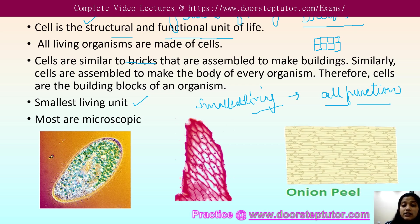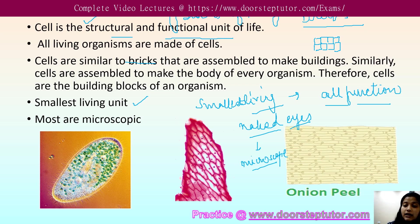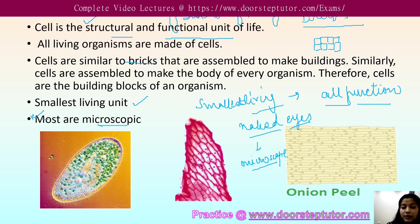We cannot see cells with the naked eye, though some cells you might be able to see without aid. Most cells, like human cells, cannot be seen by the naked eye, so they are viewed under a microscope, which helps us see images at a higher magnification. Therefore, cells are said to be mostly microscopic in nature.